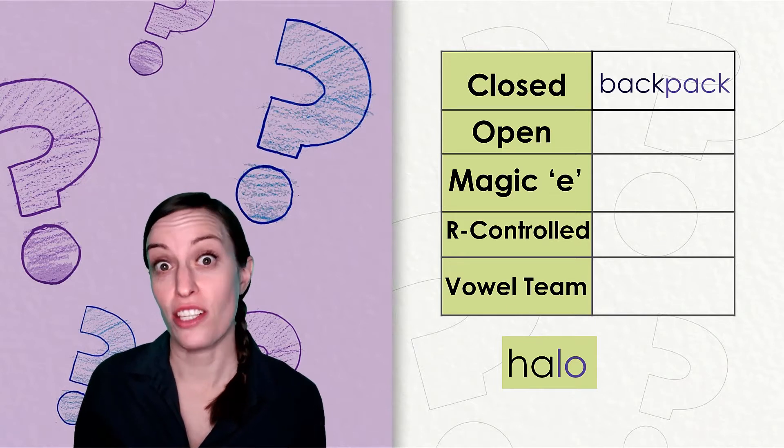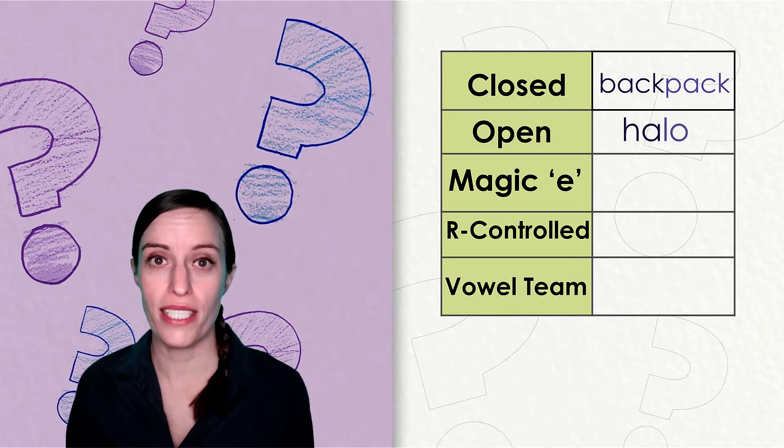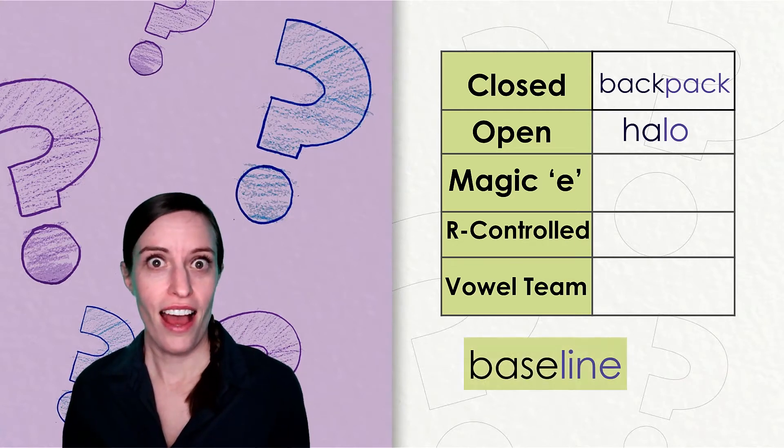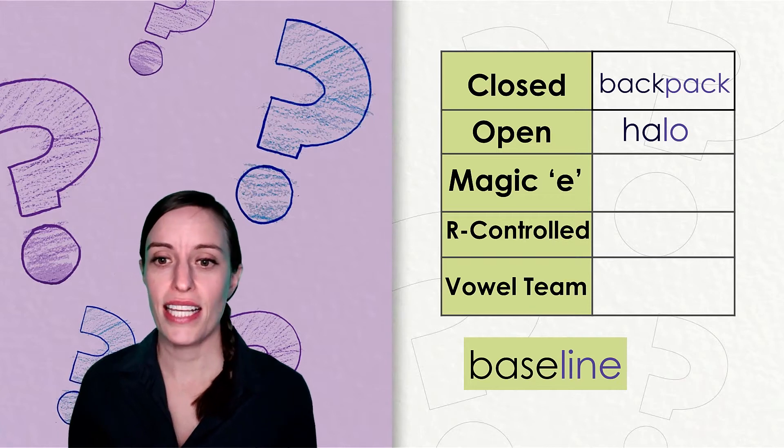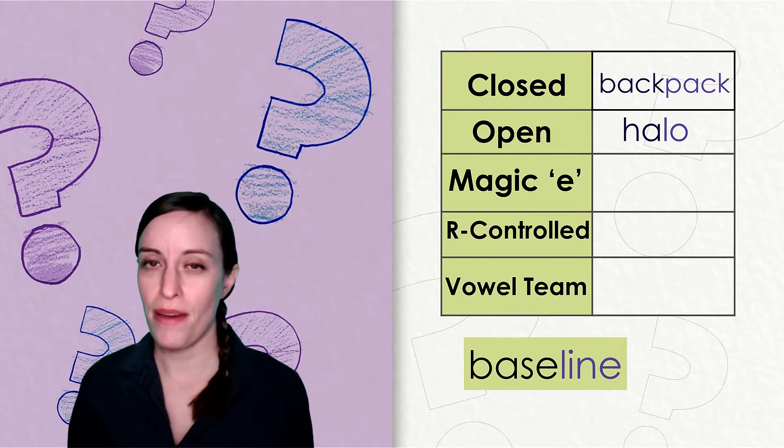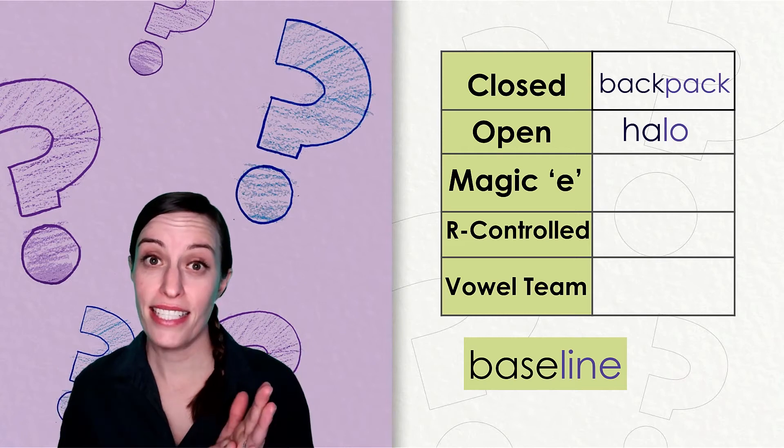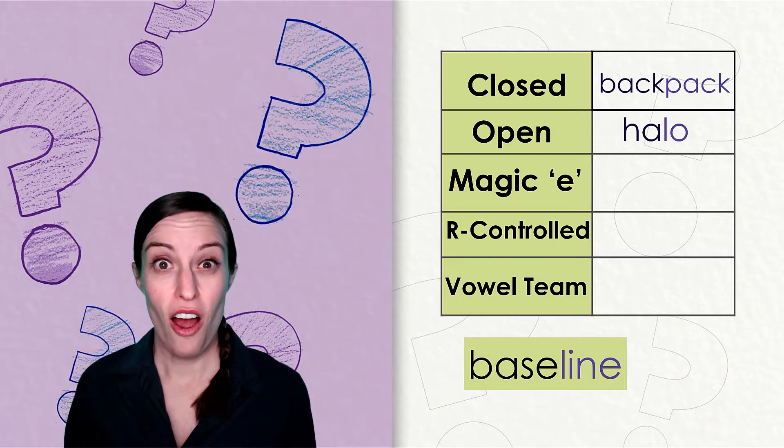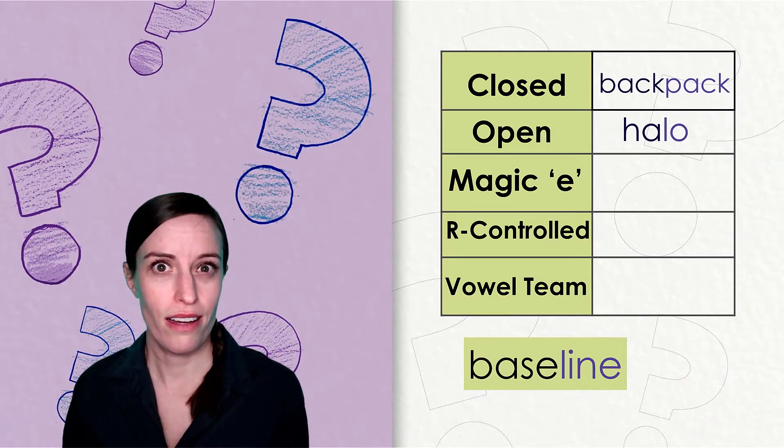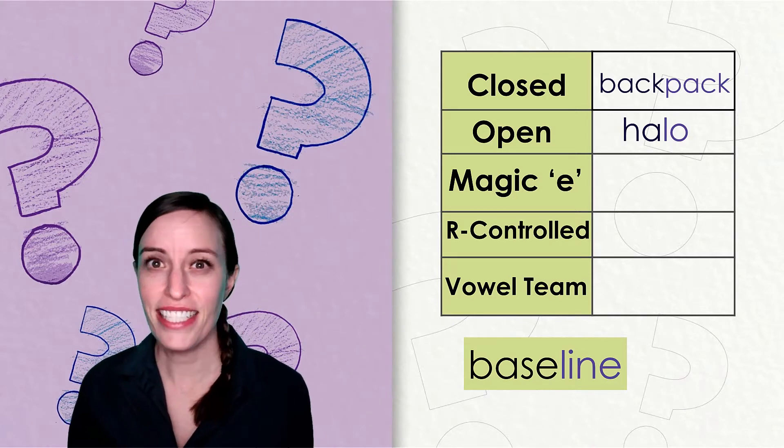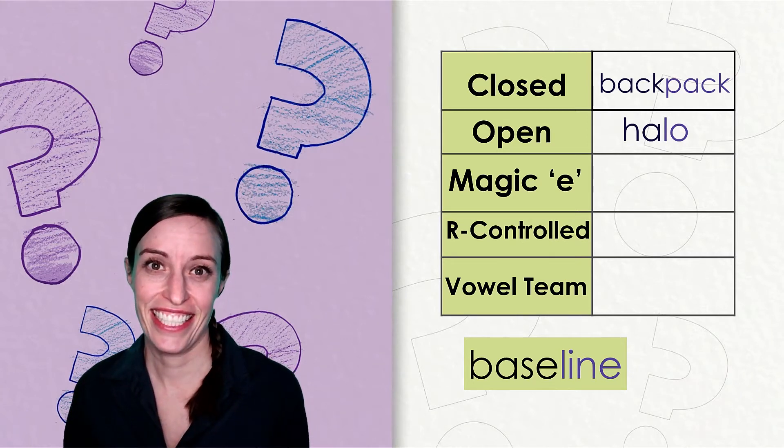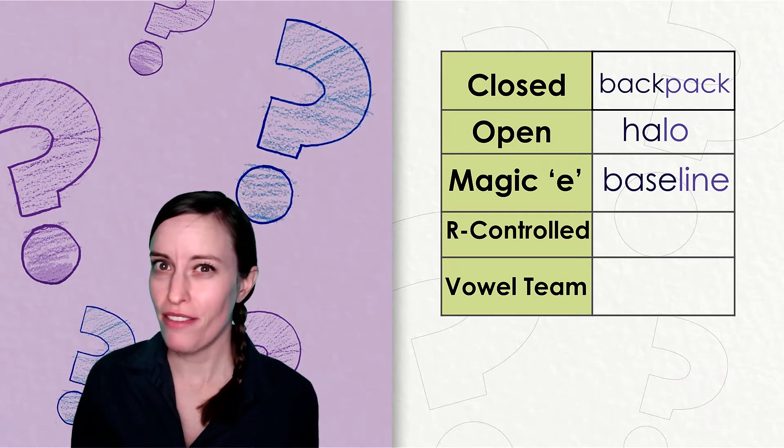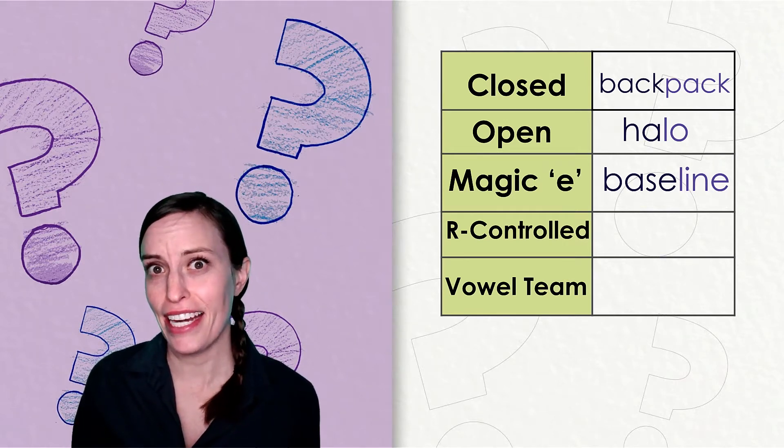Ha and lo are both open syllables. That's how those vowels say their long sound. The next word is baseline. Let's clap it out together: base-line. Base and line are the same kind of syllable. Can you tell me what kind it is?